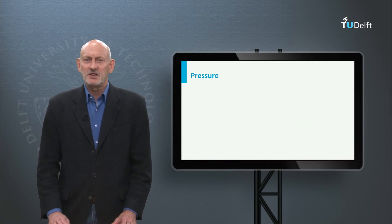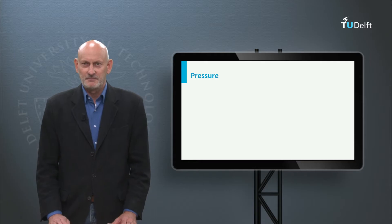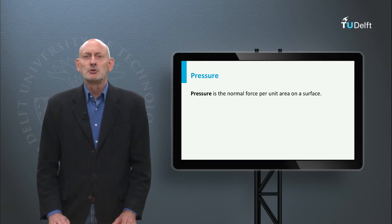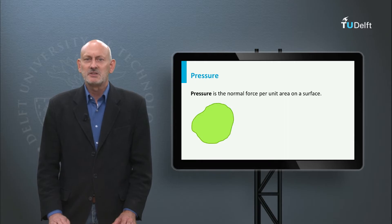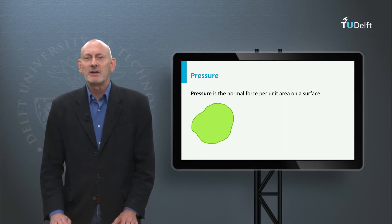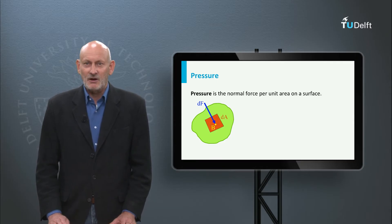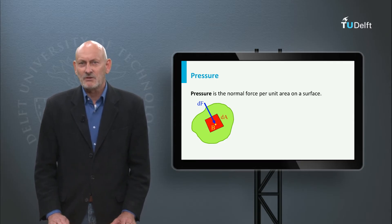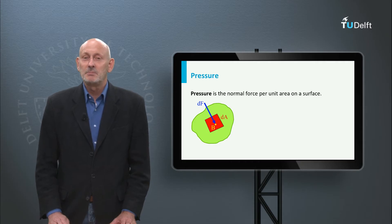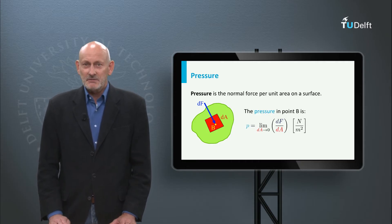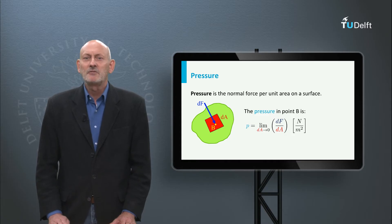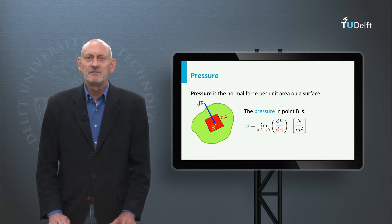Let's first look at the pressure in a point of the flow field. Pressure is the normal force per unit area on a surface. Here we can see a surface with an incremental force dF acting on an incremental part dA of the surface. Somewhere on the surface dA there is a point B. The pressure in point B is the limit of dA going to zero of the incremental force dF divided by the incremental area dA.